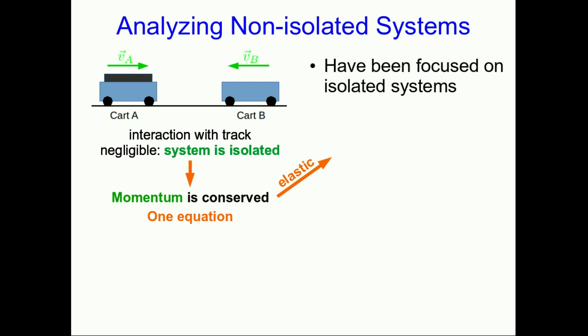If we have more than one unknown but the collision is elastic, then we can either use the fact that the kinetic energy is conserved or that the relative speed is unchanged. Either way we have another equation and we can solve for another unknown.